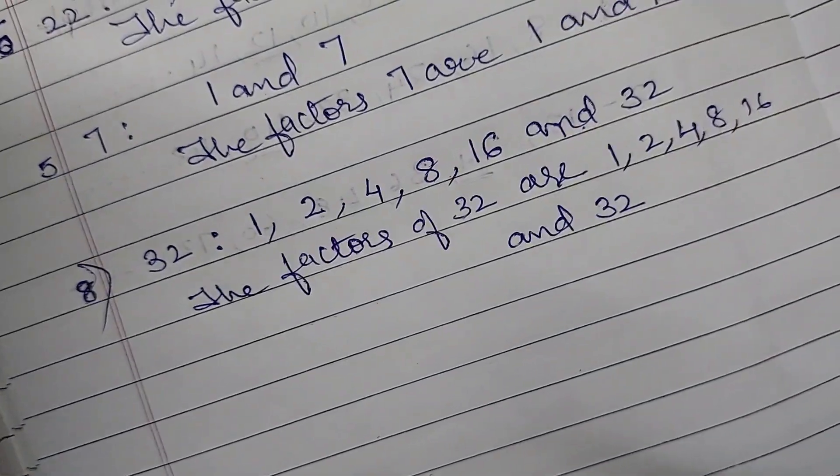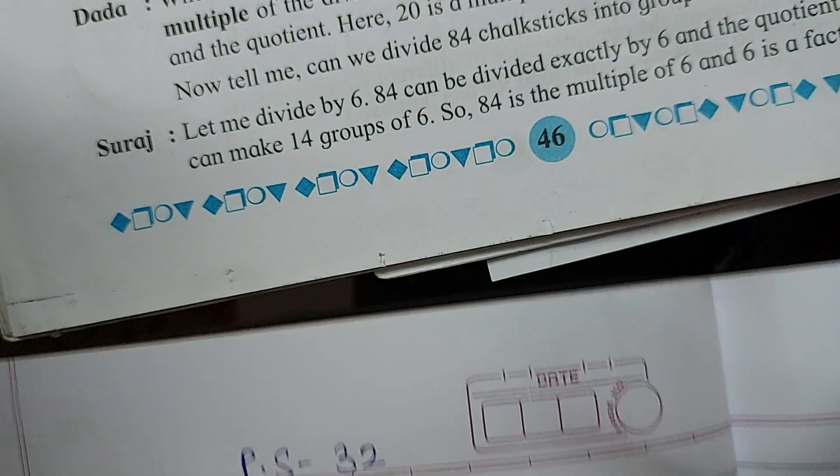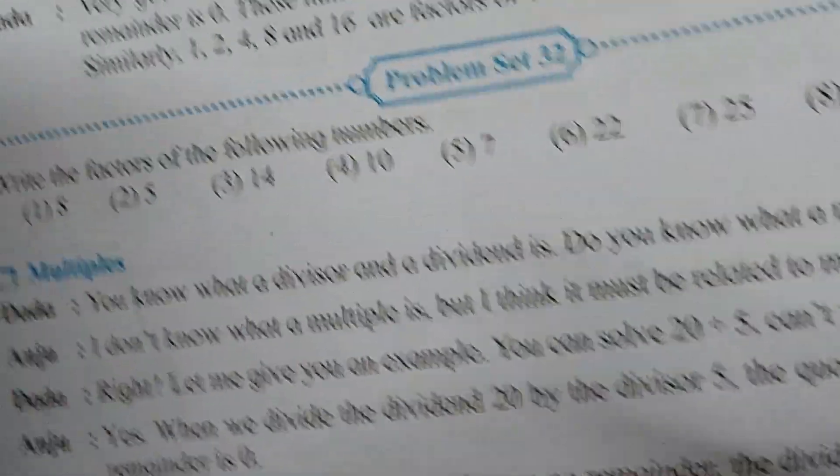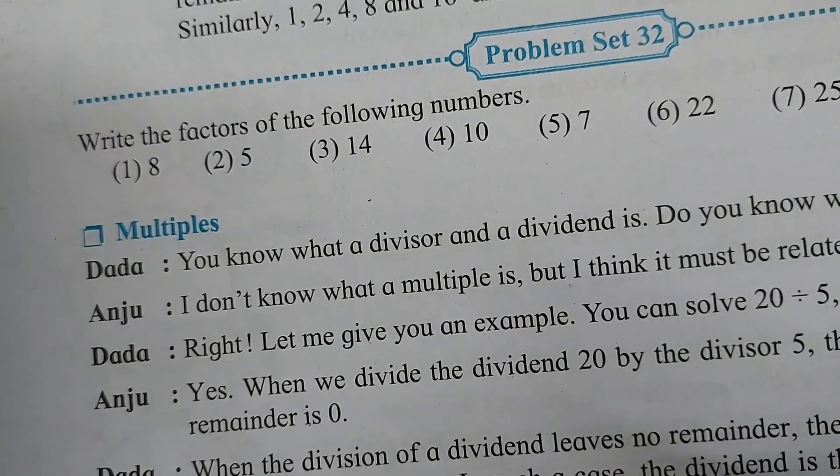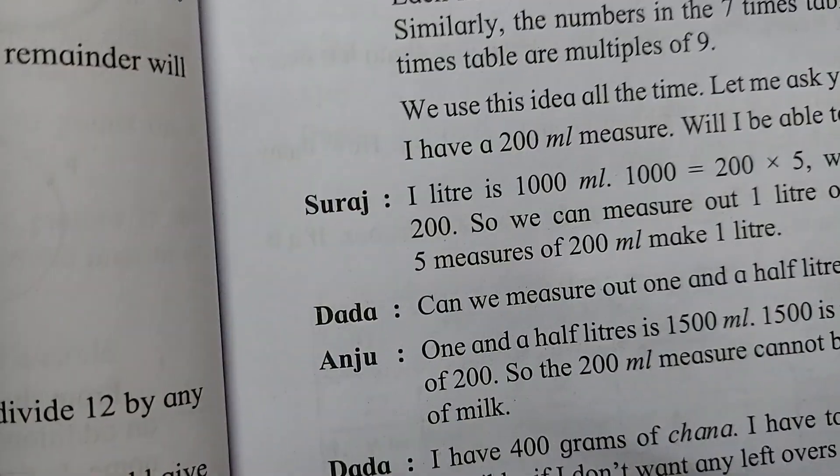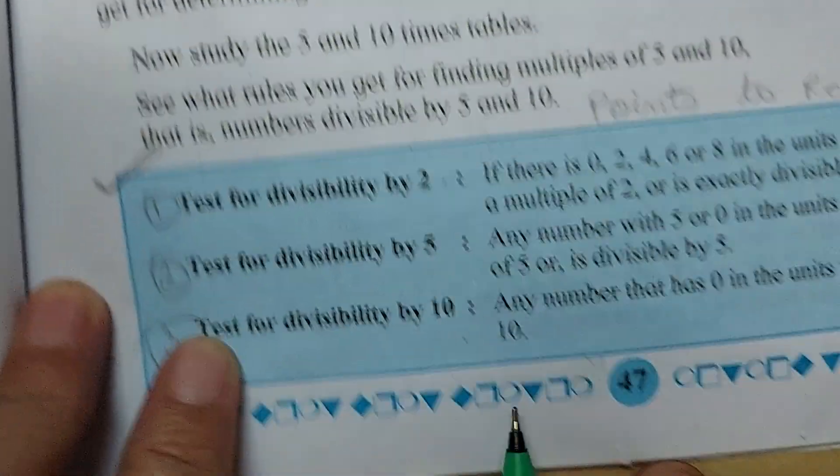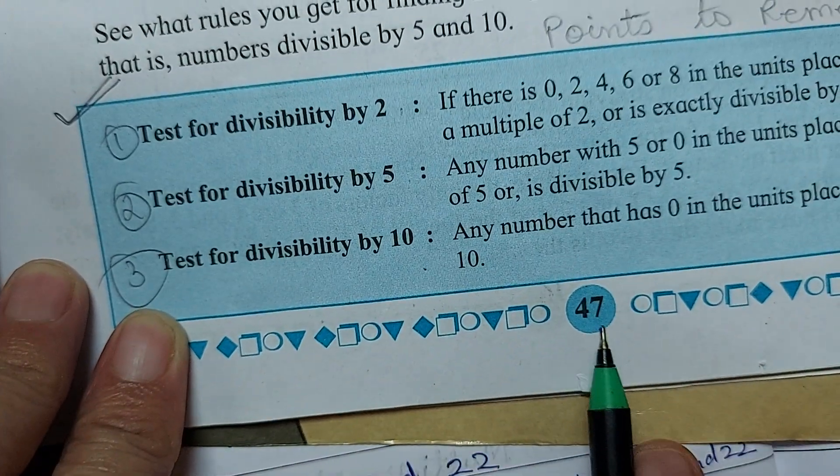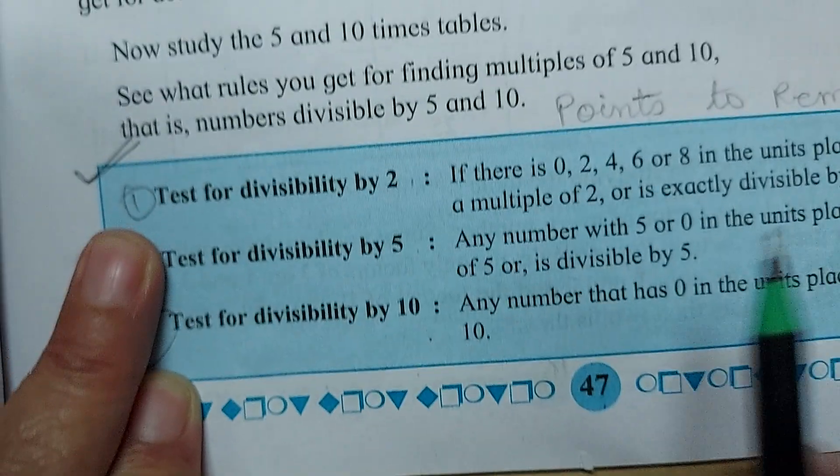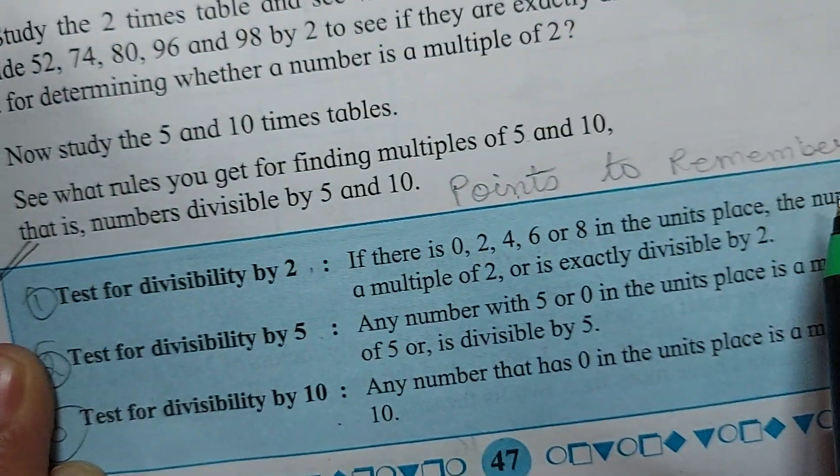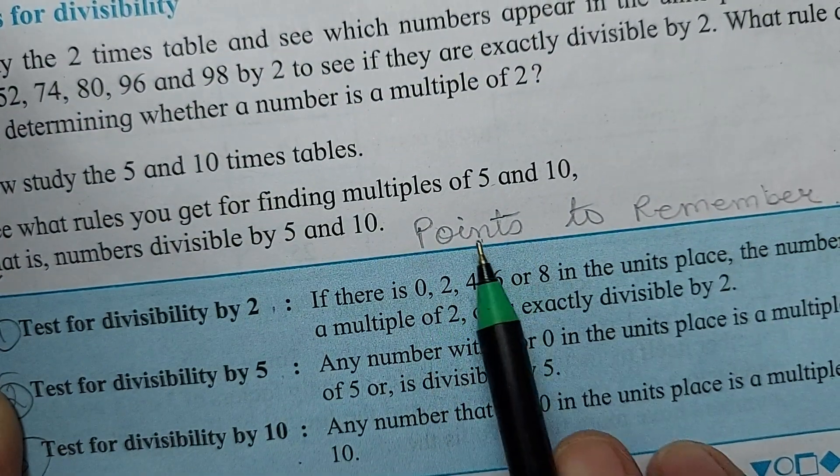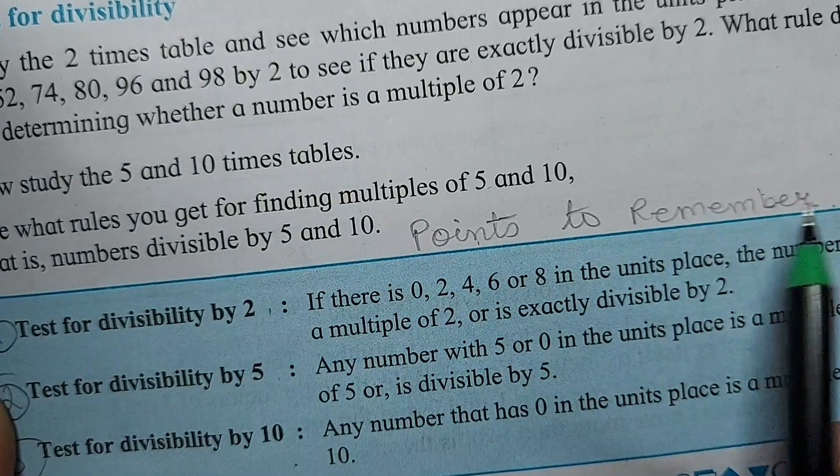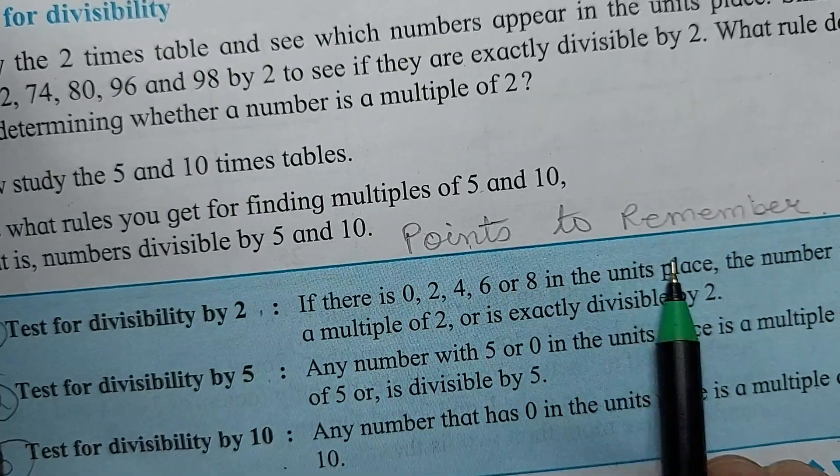So now we have completed problem set number 32. Do it neatly in your notebook. Do it nicely. Complete your work. Moving further. Coming to the next part of this chapter is divisibility check. Now this is page number 47 of your textbook. This is points to remember. You can see this points to remember. You have to learn this. You have to keep this in your mind.